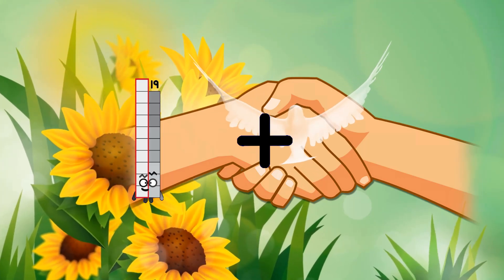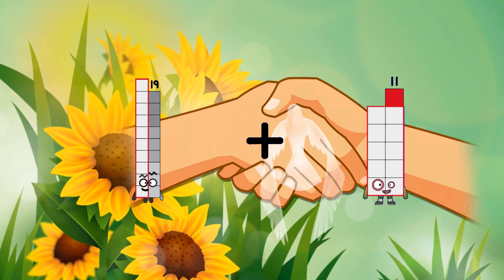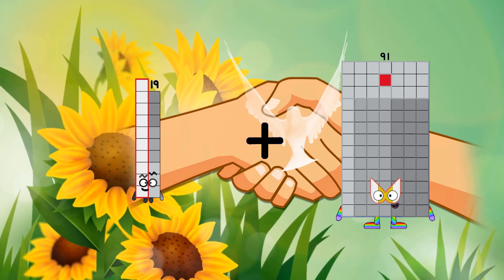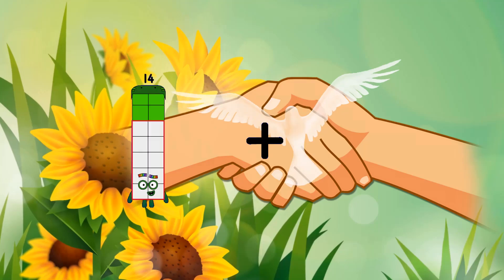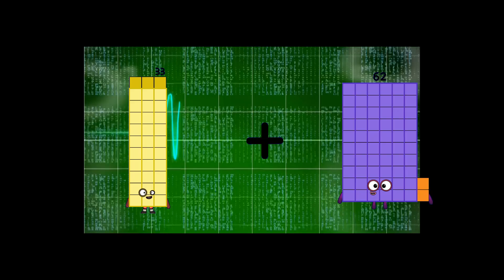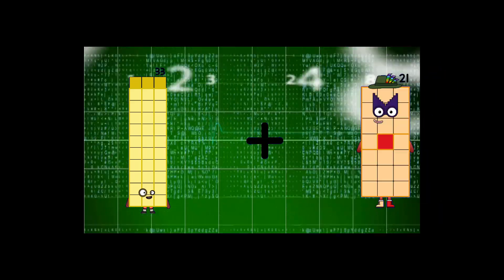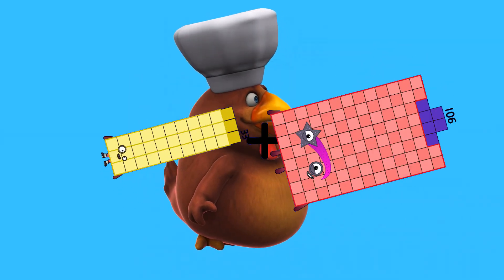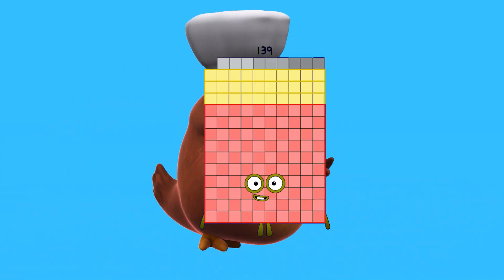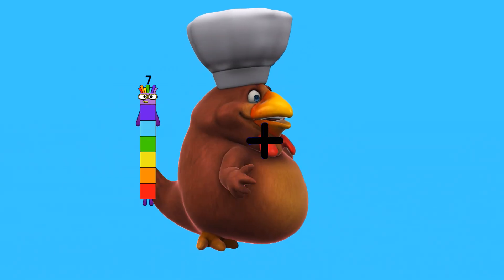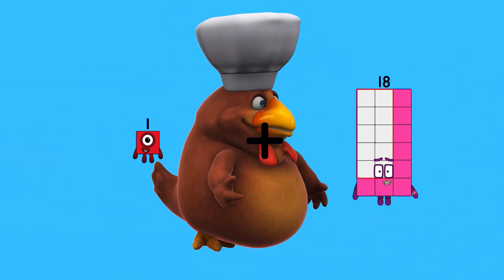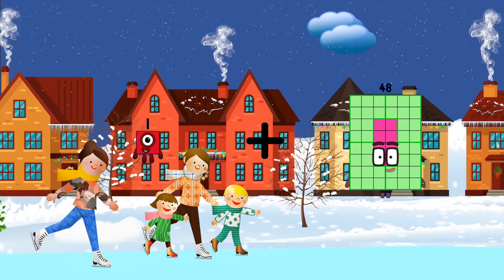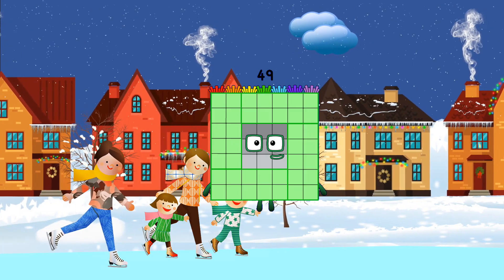19 plus 91 equals 110. 33 plus 106 equals 139. 1 plus 48 equals 49.